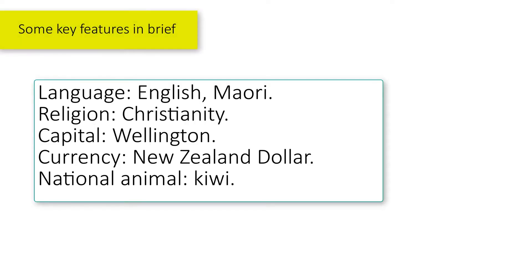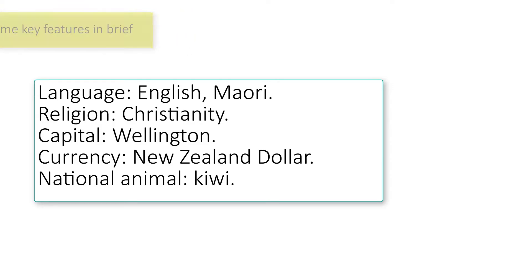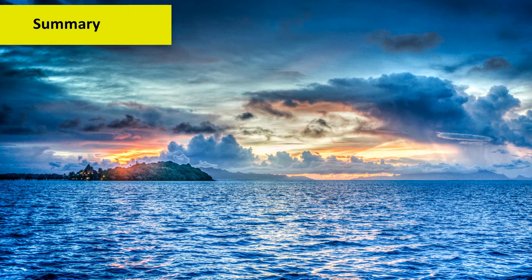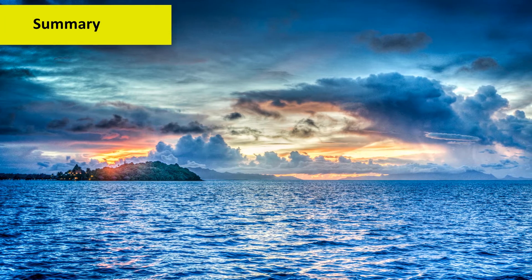Some key features of New Zealand in brief: language — English and Maori; religion — Christianity; capital — Wellington; currency — New Zealand dollar; national animal — Kiwi.